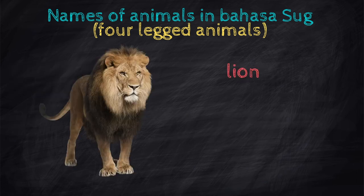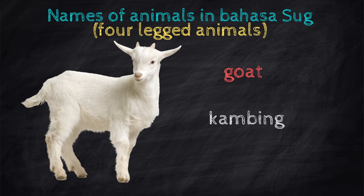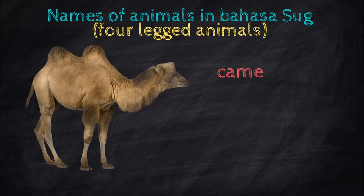Lion — Singa. Goat — Kambing. Deer — Usa. Camel — Unta.